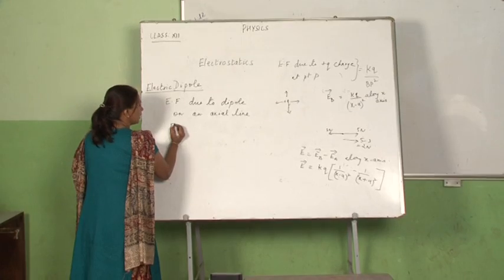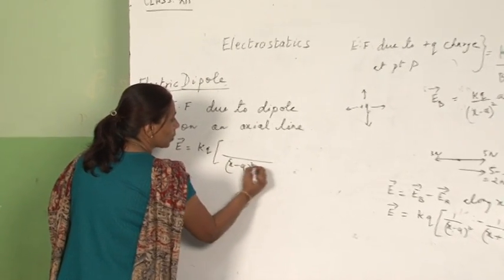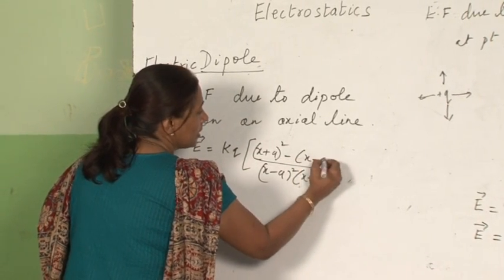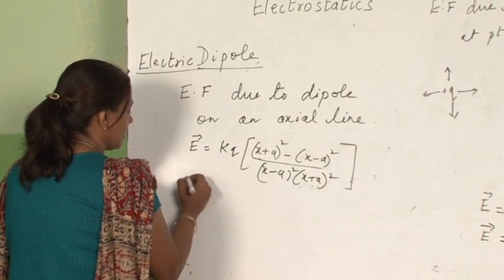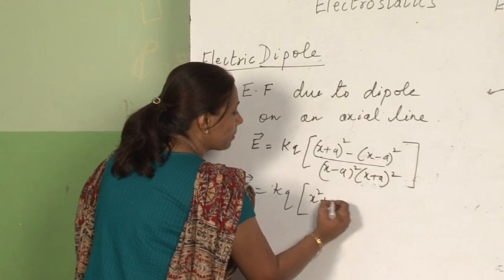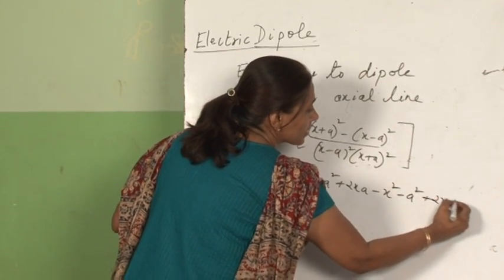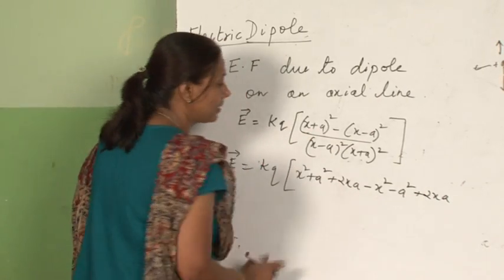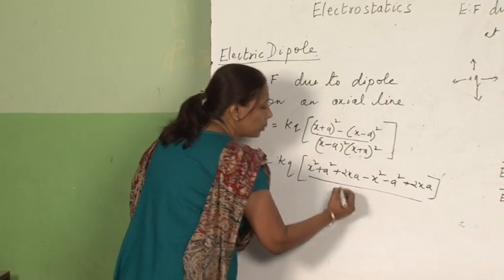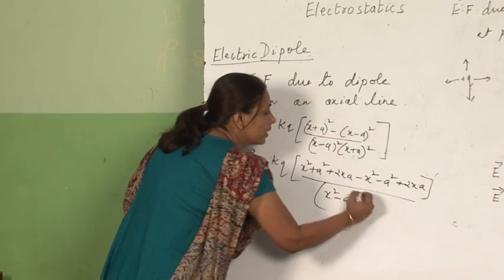E is equal to kq times the difference of the two fractions. Expanding the numerator using the (a+b)² formula: (x minus a)² gives x² + a² minus 2xa, and (x plus a)² gives x² + a² plus 2xa. Subtracting gives 4xa in the numerator. For the denominator, we use the (a+b)(a-b) = a²-b² formula, so it becomes (x² minus a²) the whole square.